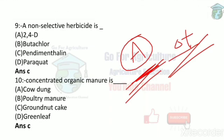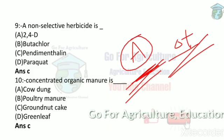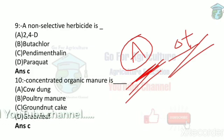Next: concentrated organic manure. Organic manures are of two types: bulky organic manure and concentrated organic manure. Bulky organic manure has fewer nutrients so it must be applied in large amounts. Concentrated organic manure has more nutrients so it can be applied in smaller amounts. Examples of concentrated organic manure are groundnut cake, castor cake, and other oil cakes, as well as blood meal. These cakes are concentrated organic manures.